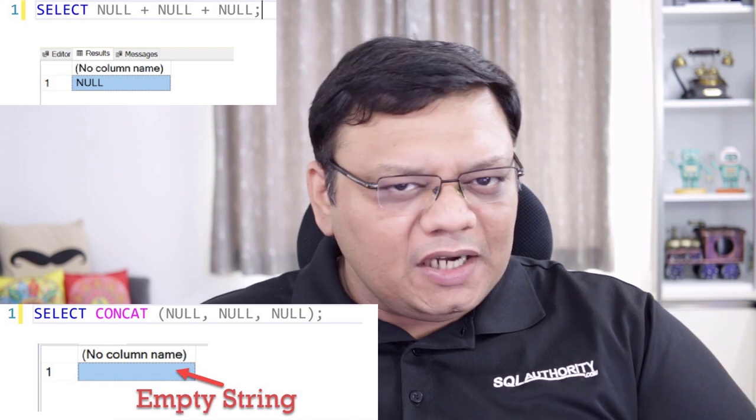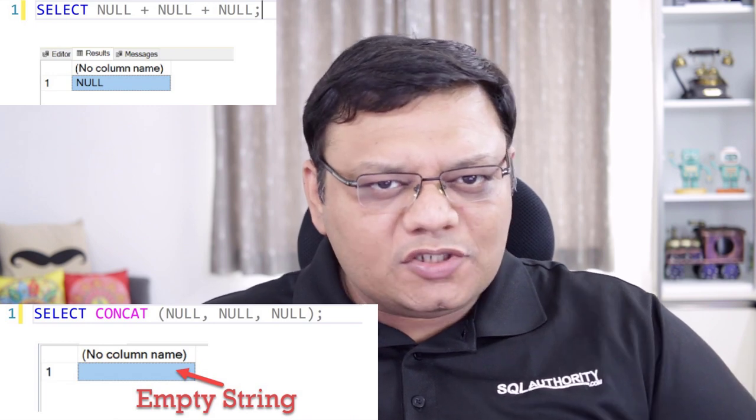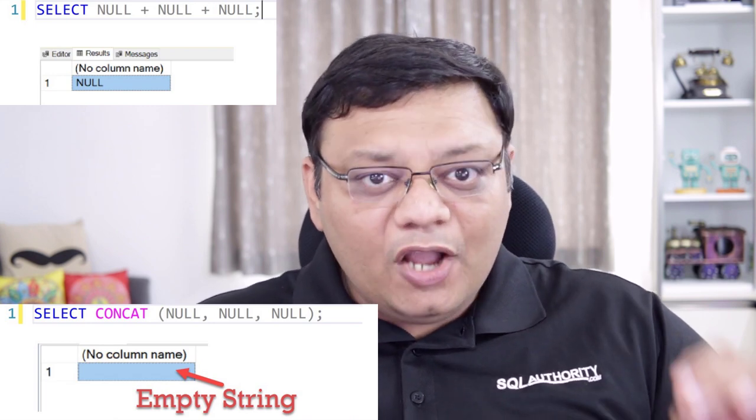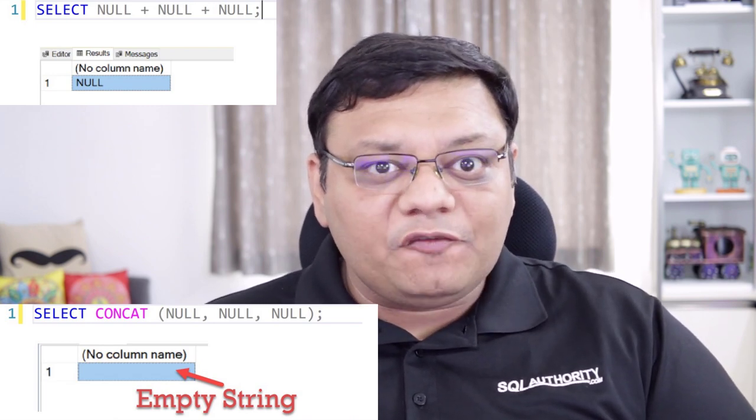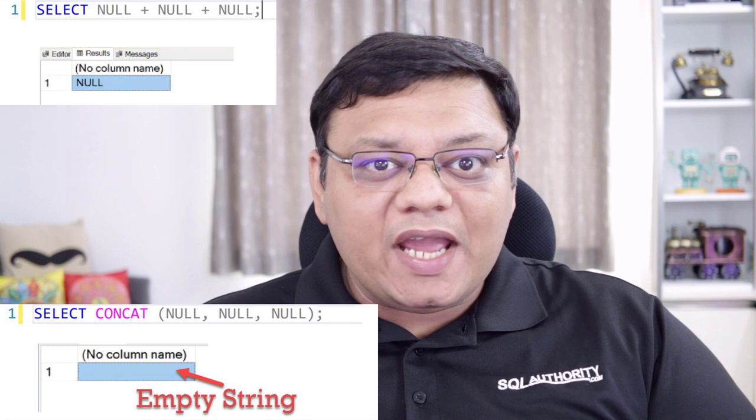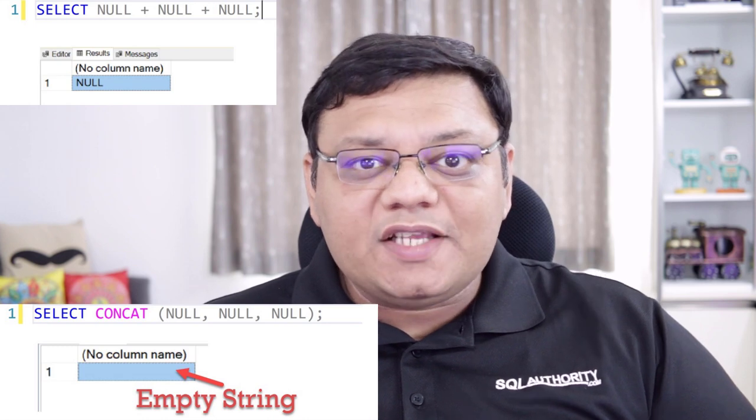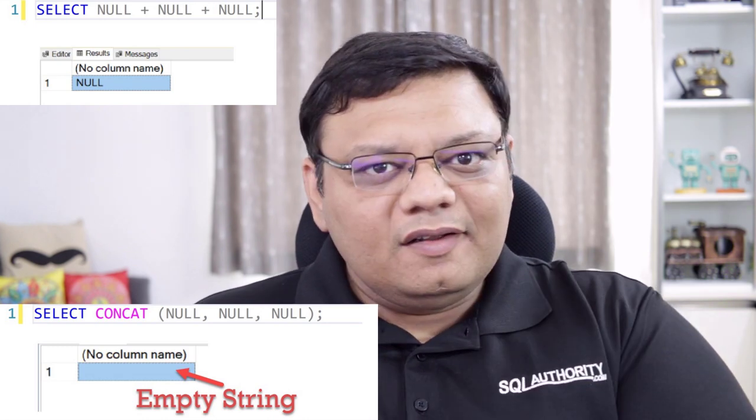When we have null values and we concatenate them with a plus sign, we get a single null value as the outcome. But if you have multiple null values and when you concatenate them with the help of the CONCAT function, you get an empty string.